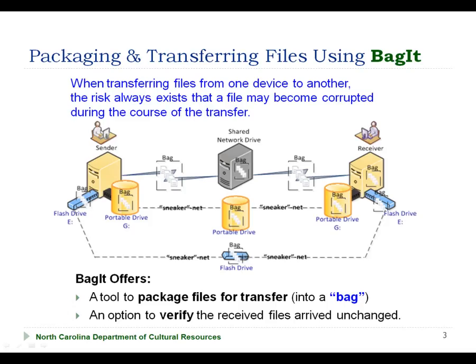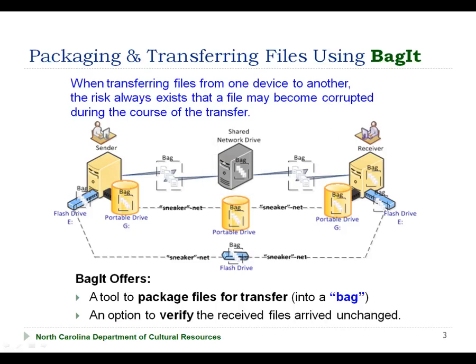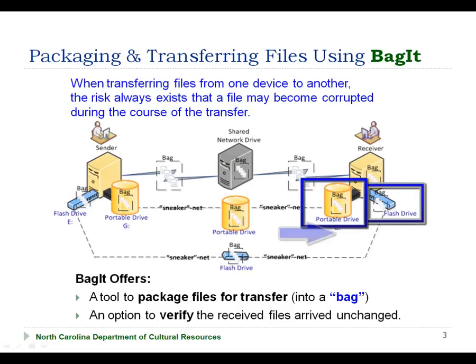You have two options for transferring the files. You can create the bag on either a shared network drive that both the sender and receiver have access to via the network — this may be mapped, for example, to your iDrive — or alternatively, you could use a USB-attached removable drive, such as a portable drive or a flash drive, that will be detached from the sender's computer, carried to the receiver's computer, and attached to the receiver's computer to retrieve the files. You can use whichever mechanism is most convenient and feasible for both you and your file transfer partner.